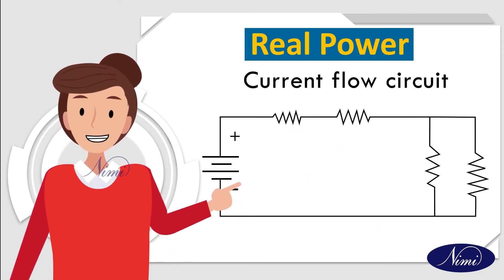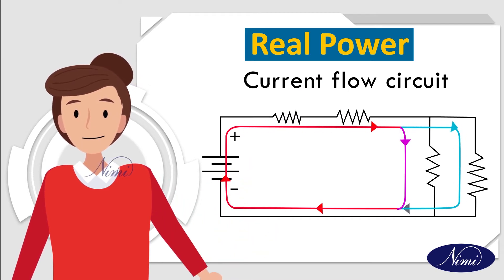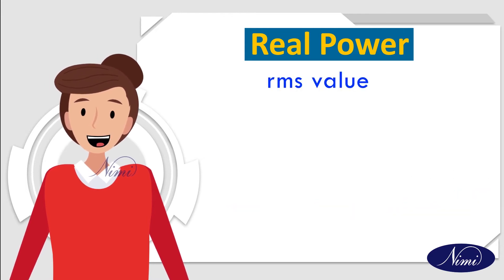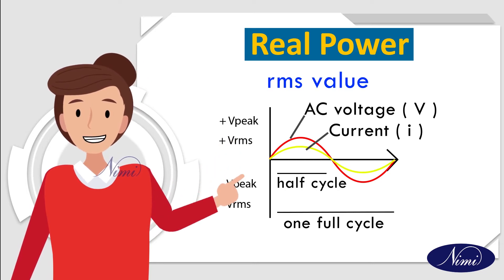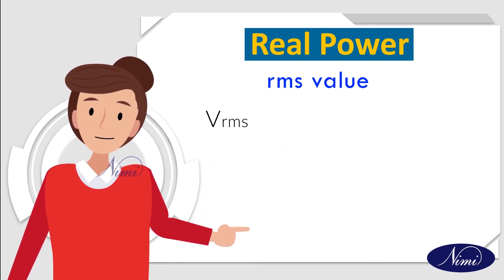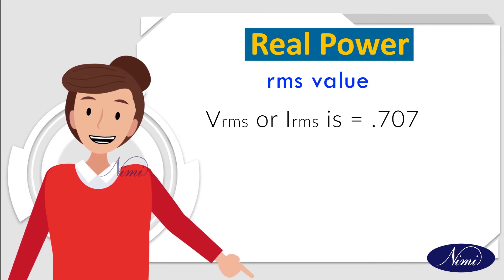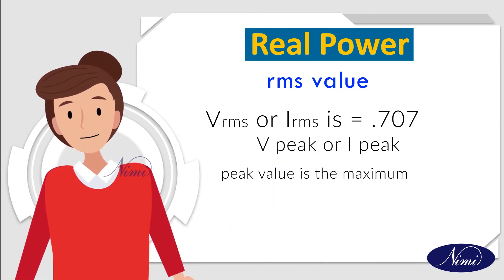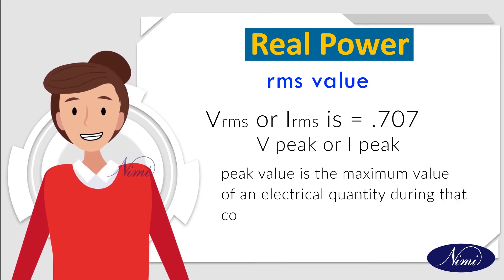We cannot take any particular point as a voltage or current value, so we go for the RMS value. We can easily find the RMS value from the peak value: V_RMS or I_RMS is equal to 0.707 times V_peak or I_peak.